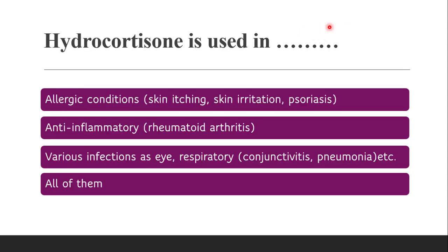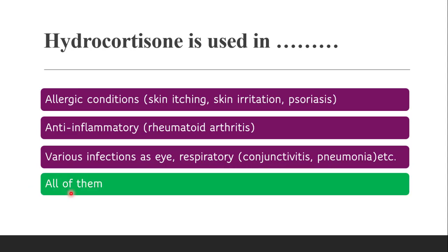Next question: hydrocortisone is used in — whether it is used in allergic conditions like skin itching, irritation, and psoriasis; as an anti-inflammatory; or in various infections such as eye or respiratory tract infections like conjunctivitis and pneumonia. The correct answer is all of them — hydrocortisone is used in all the above conditions.